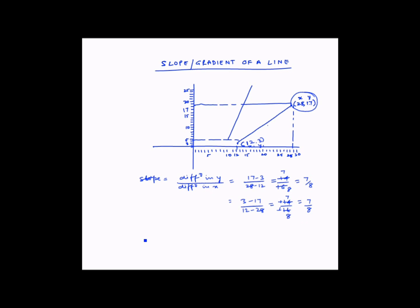Now let us look at a different line. For this line, the coordinates are (0, 12) — x is 0 because it is on the y-axis, and y is 12. At the other point, the x-axis value is 8 and the y-axis value is 0.